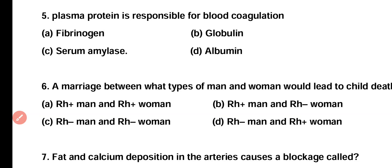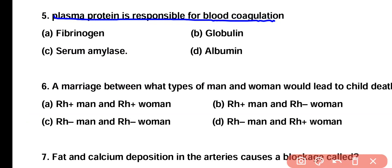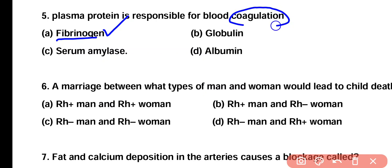Question number 5. The plasma protein that is responsible for blood coagulation: fibrinogen, globulin, serum amylase, or albumin? Correct answer is option A. Fibrinogen is a blood plasma protein that is responsible for coagulation of blood.